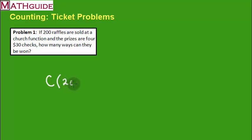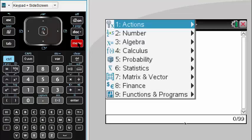This particular problem is pretty easy to see that we are going to use the combinations formula. There are 200 tickets and we're going to choose four of them. You'll notice that the $30 has nothing to do with this. Now we plug this into a calculator.